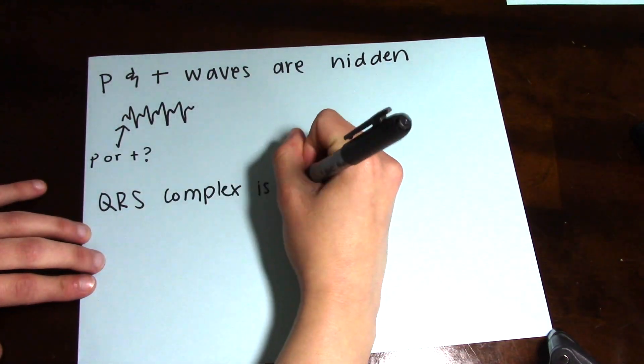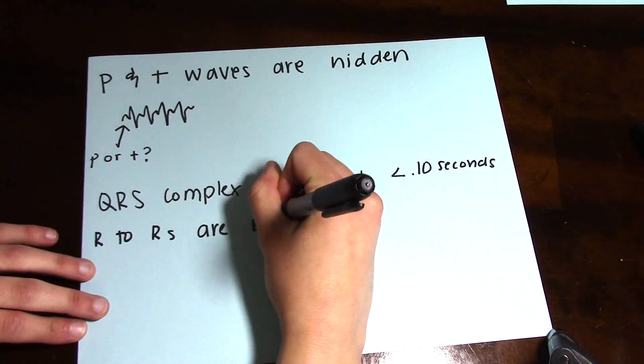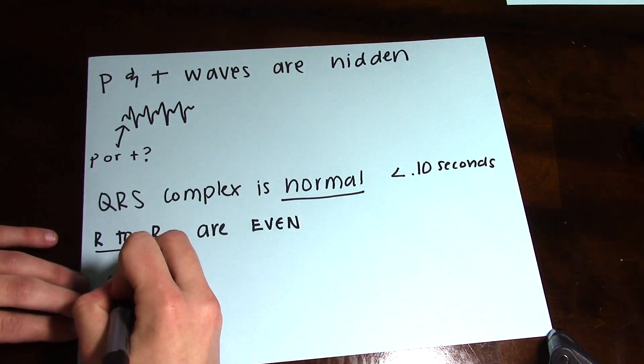In SVT, the QRS complex is normal or less than 0.10 seconds, and your R to R intervals are even and consistent.